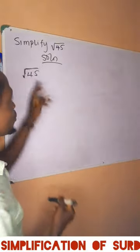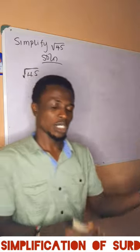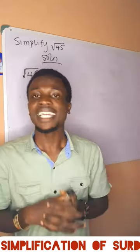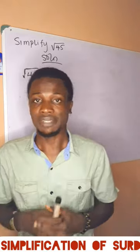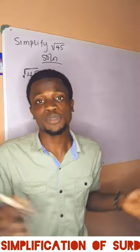So how do I analyze that? What is root 45? Can we get a perfect square that will multiply another number to give us 45? Yes, of course. 9 times 5 is 45, and 9 is a perfect square.